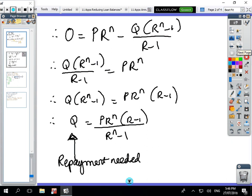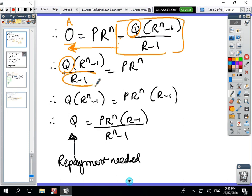If we've got A equals 0, we're going to rearrange the formula to make Q the subject. The first thing I do is bring this whole second part across to the other side to make it a positive. If it's a minus on this side, when you bring it across it'll become a plus. So I've just brought that box across the other side equals PR^n.